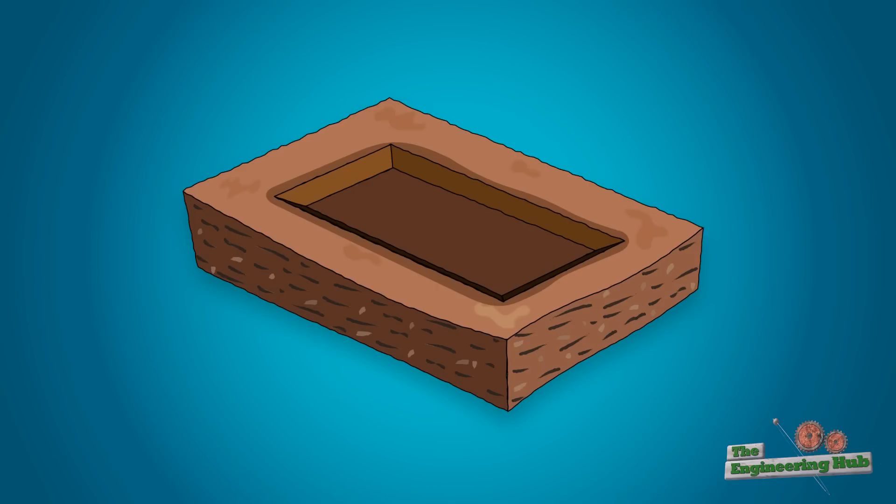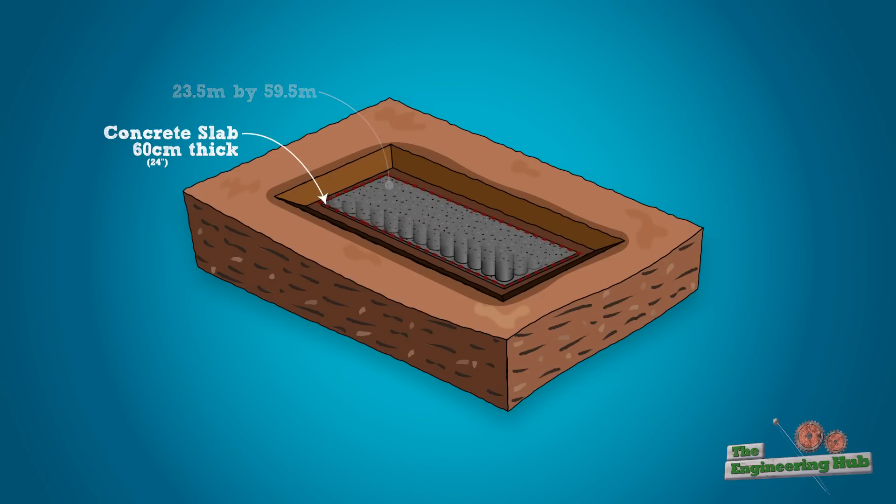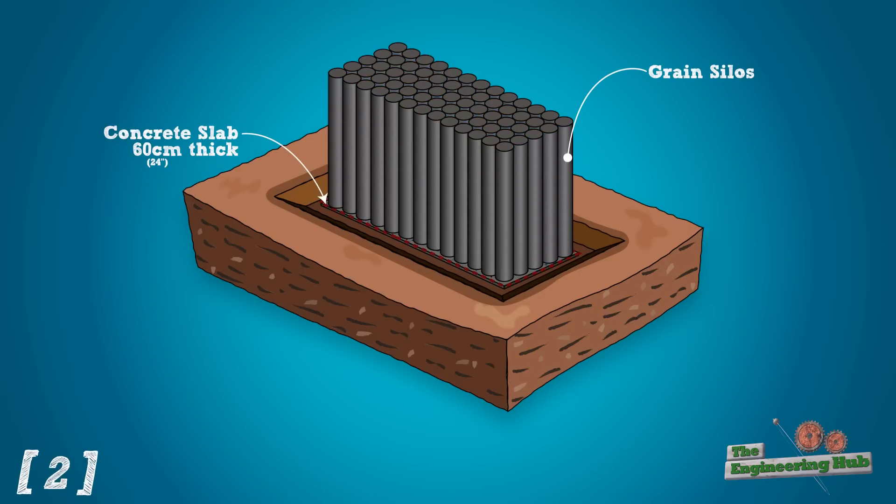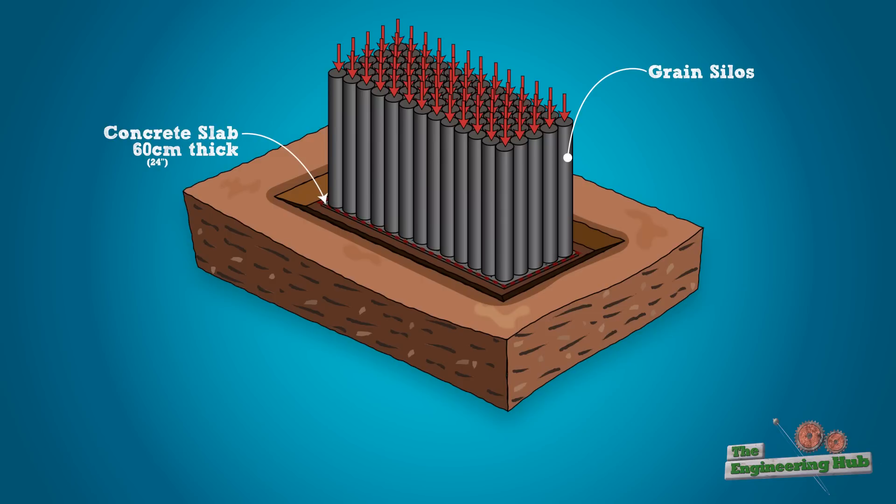With this knowledge, the bin house was designed to occupy an area of 23.5 by 59.5 meters, where a total of 65 grain bins were placed on top. At full capacity, the structure, together with the grain, was designed to weigh around 42,500 tons.